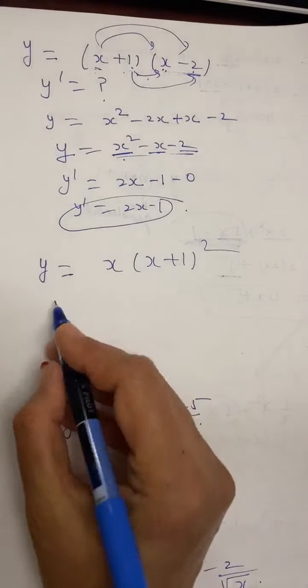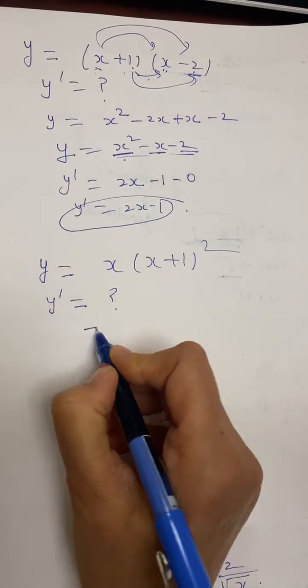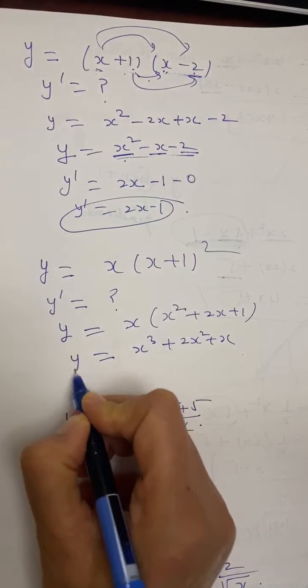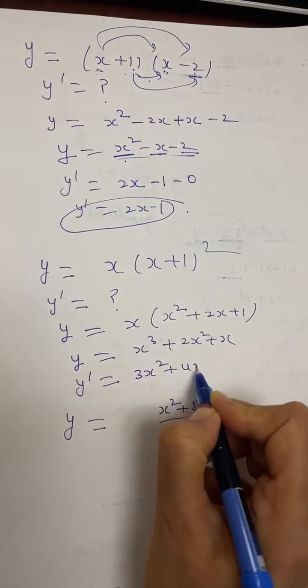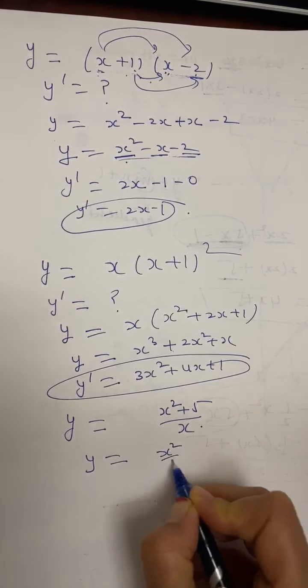For y equals x times (2x plus 1), expand first to get y equals 2x squared plus x, then y' equals 4x plus 1. Wait — expanding x(2x plus 1) gives x cubed plus 2x squared plus x, so y' equals 3x squared plus 4x plus 1. For y equals (x squared plus 5) over x, separate to get y equals x plus 5x to the power of negative 1. Then y' equals 1 minus 5 over x squared.